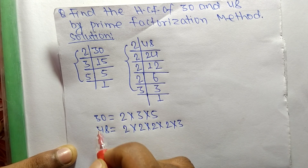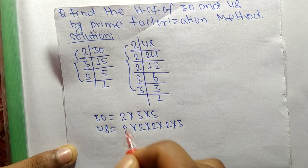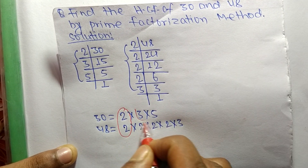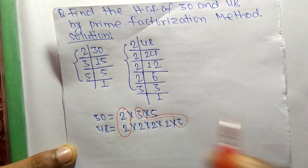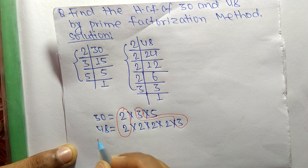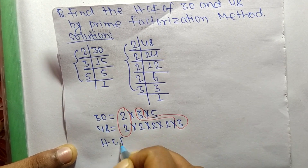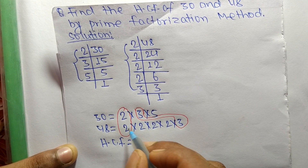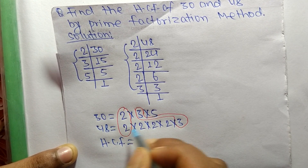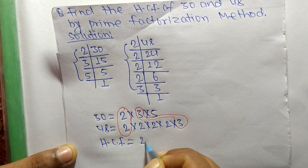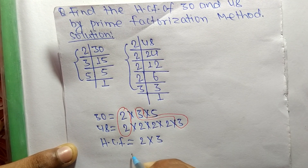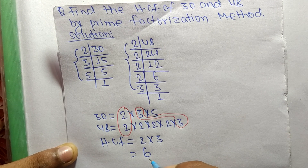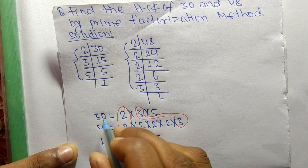Now we find the common factors in the prime factorizations of 30 and 48. The first common factor is 2 and the second is 3. So the HCF is equal to 2 times 3, which is 6. Therefore, 6 is the HCF of 30 and 48.